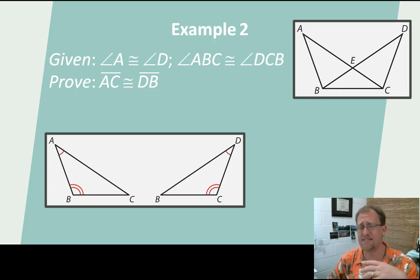So, BC is itself, right? Reflexive property. And so, I can say, well, now I have angle, angle, side. These triangles are congruent. And then, therefore, because they're congruent, I have corresponding parts of congruent triangles congruent, and those other segments must be the same, too. So, let's see it written out.